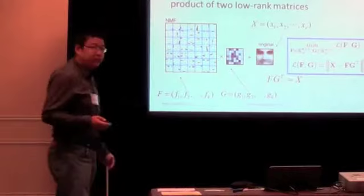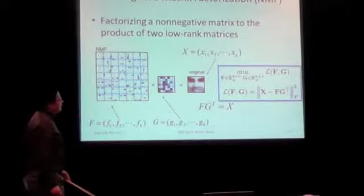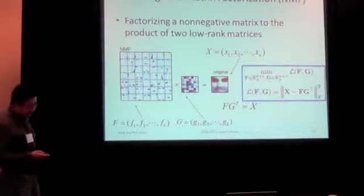If you have questions, just raise your hand. This optimization problem is actually, because of the non-negativity constraint, not a convex problem. So in order to solve it, there are two popular strategies.